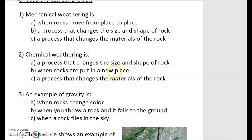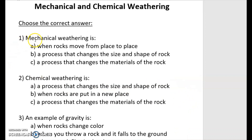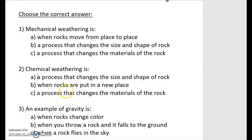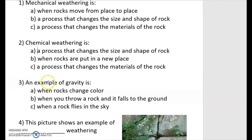Chemical weathering is: a process that changes the size and shape of rock, when rocks are put in a new place, or a process that changes the materials of the rock? Pay attention — mechanical changes size and shape, chemical changes the materials. Not the same thing.